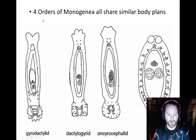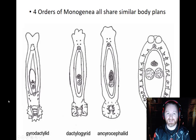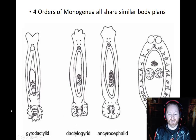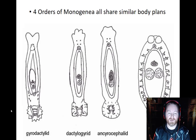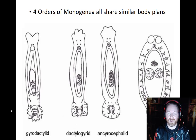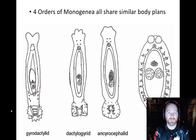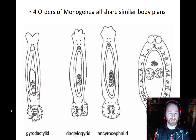There are four different orders of monogeneans, and the way we distinguish their orders is basically by looking at their body plans — their body shapes and sizes. We're not going to study the orders in detail, but just know that the orders of monogeneans are determined by their body plan and body shape.